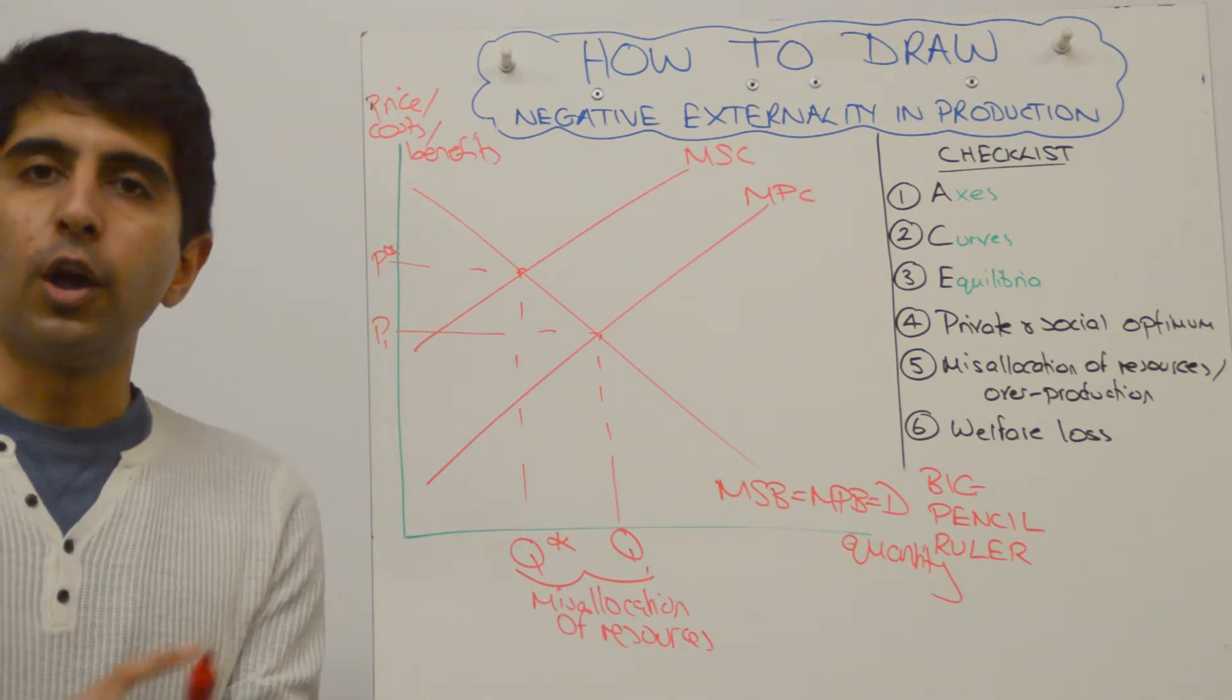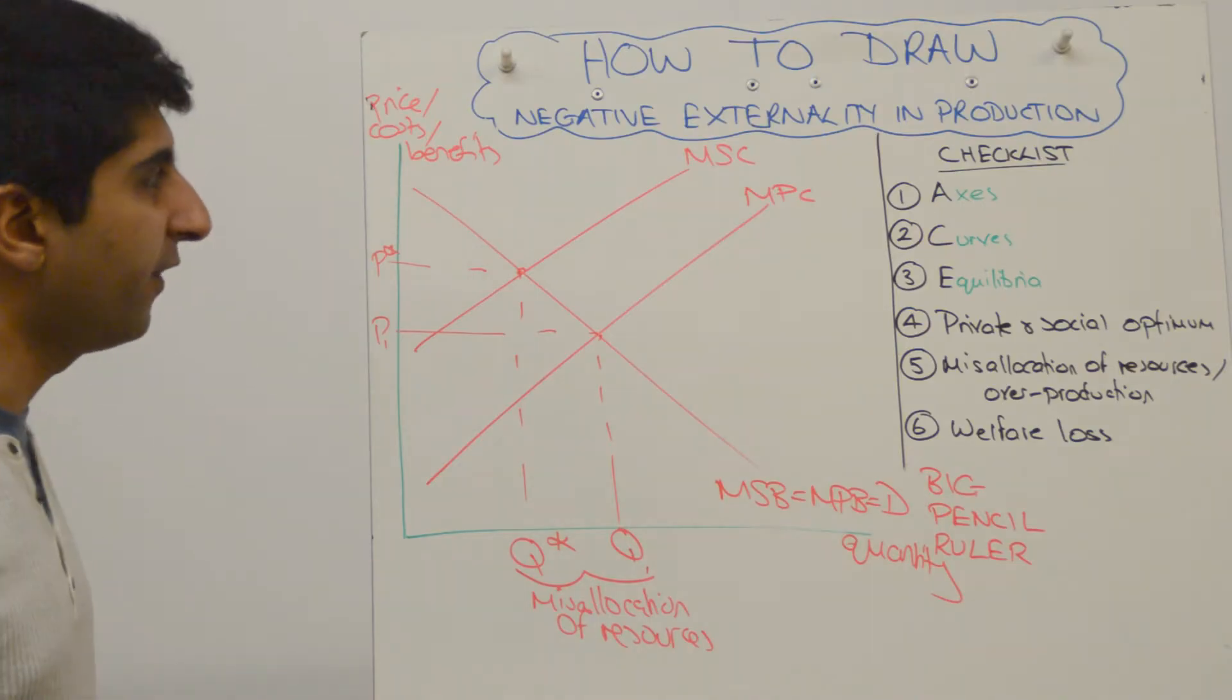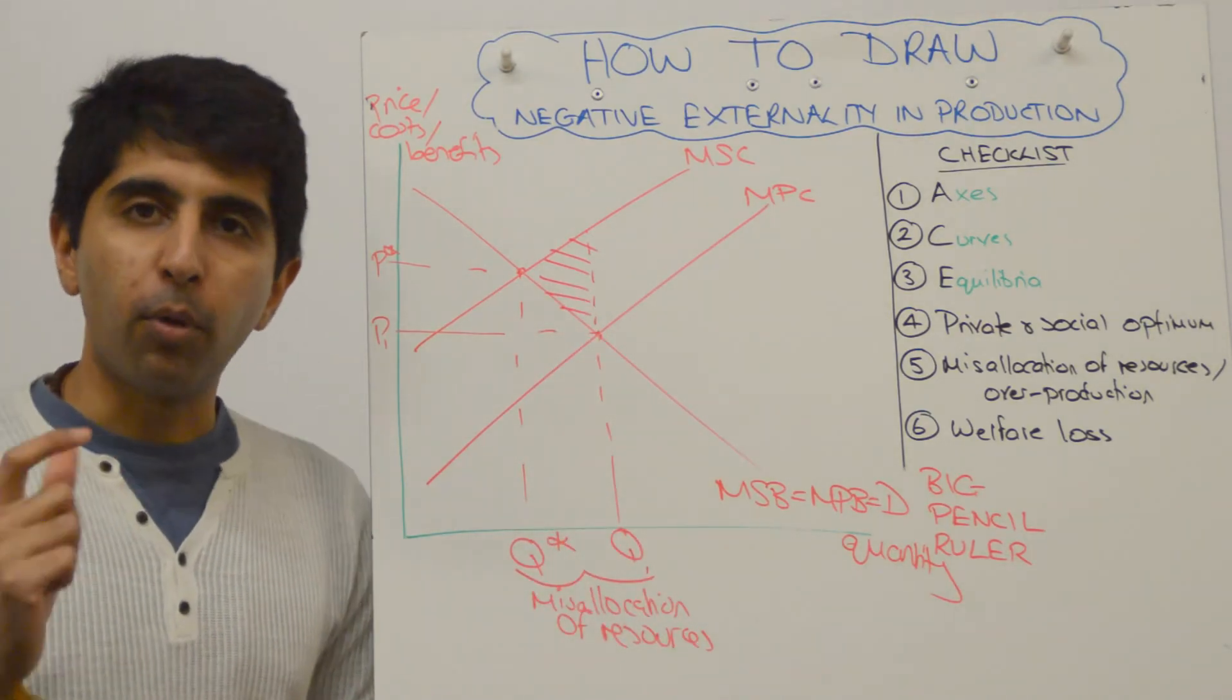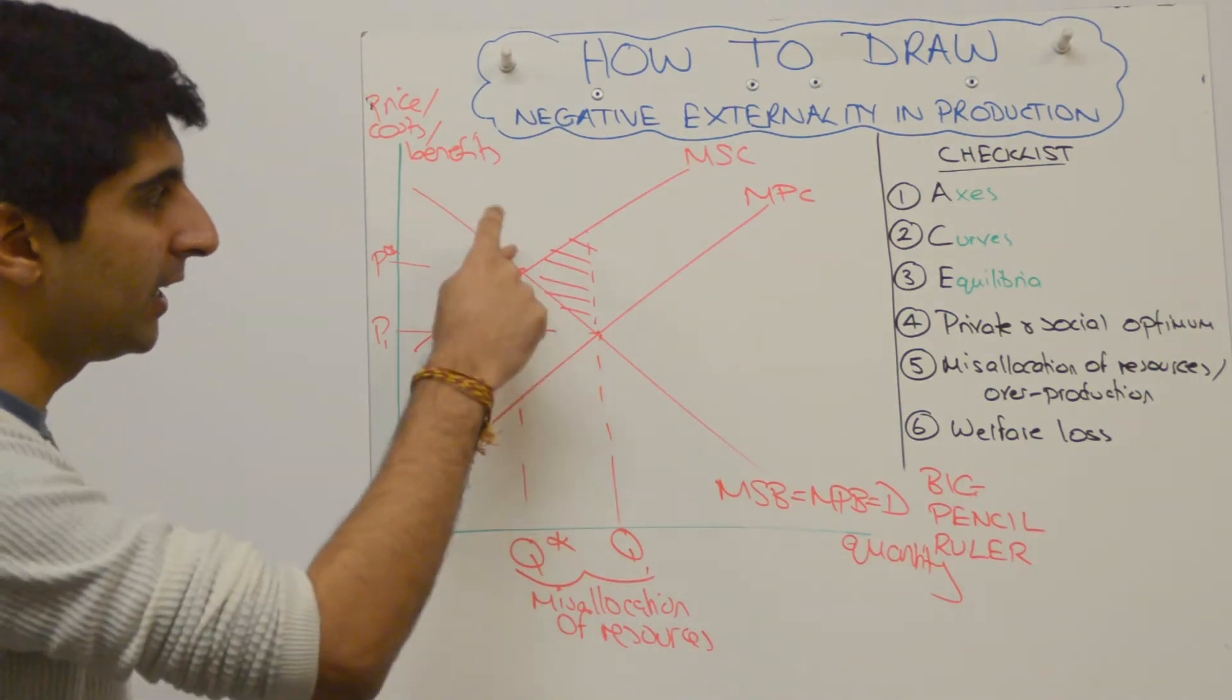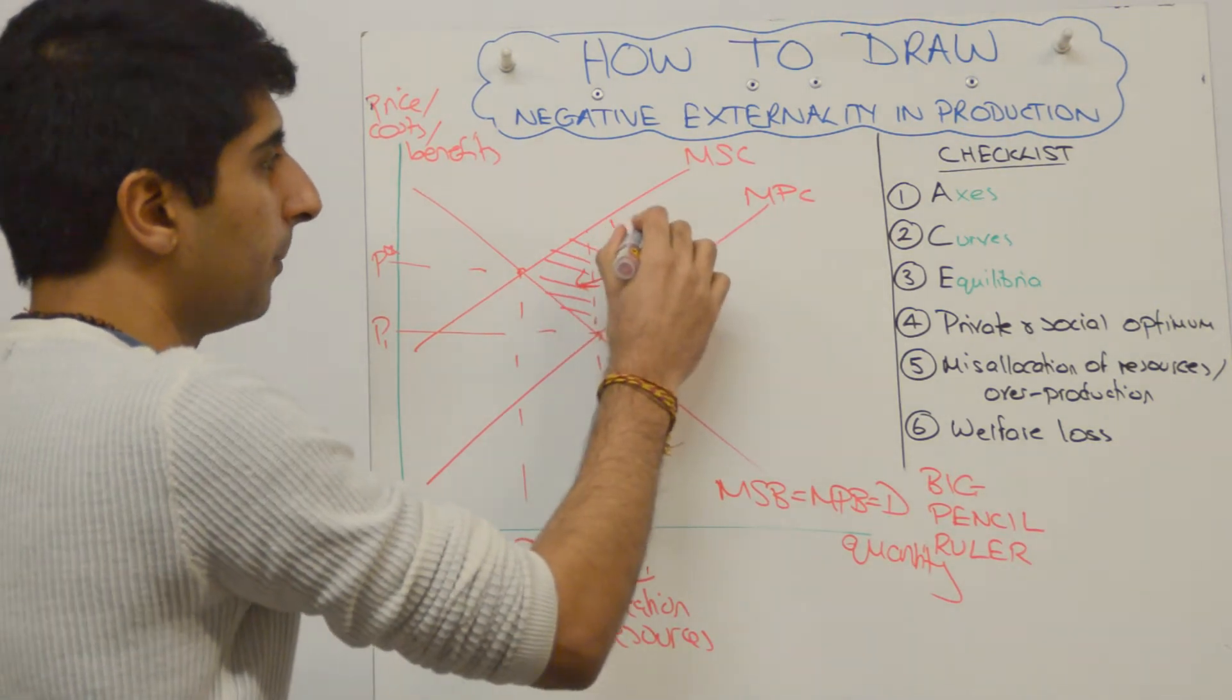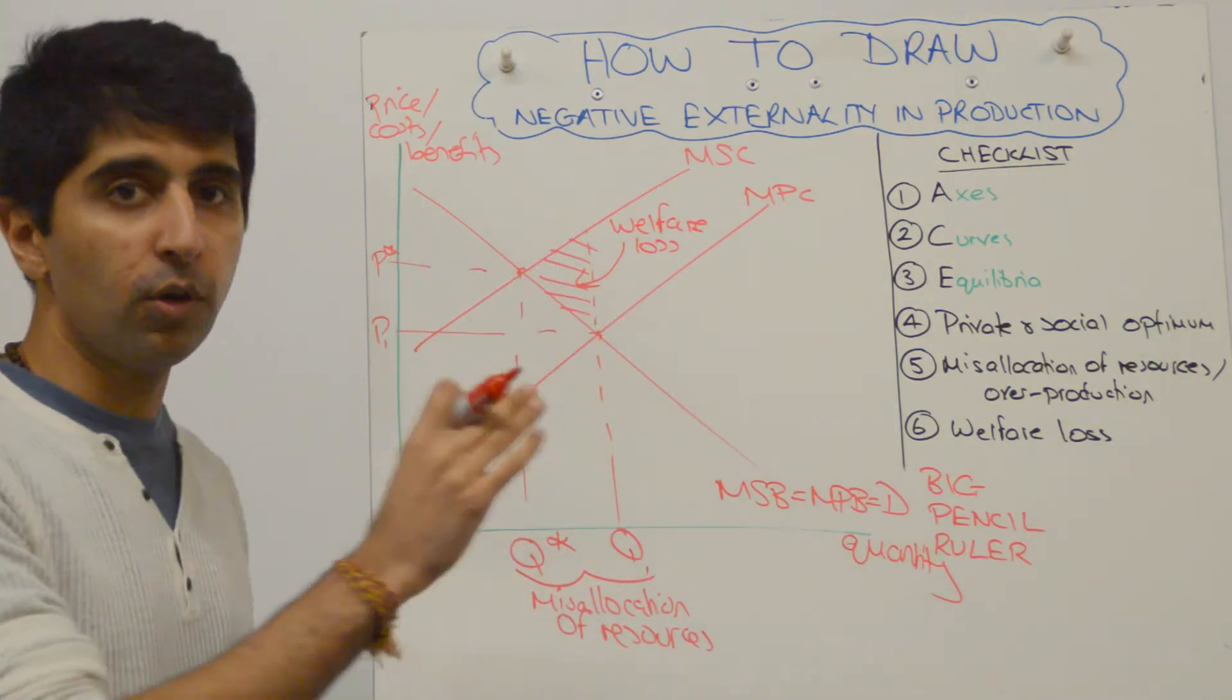But we're not finished just yet. You know that in market failure, there are welfare losses. If the market is not doing its job properly, society loses out. There is a loss of welfare. And we show that by shading in this triangle. Now the trick with the welfare loss triangle is that it's always the triangle that points towards the social optimum. There is only ever one triangle that does that on these diagrams. And that's the one shaded in there. The theory behind why is all explained in my previous video on negative externalities. This video is all about just telling you how to draw it correctly. So the triangle that points towards the social optimum is your welfare loss.